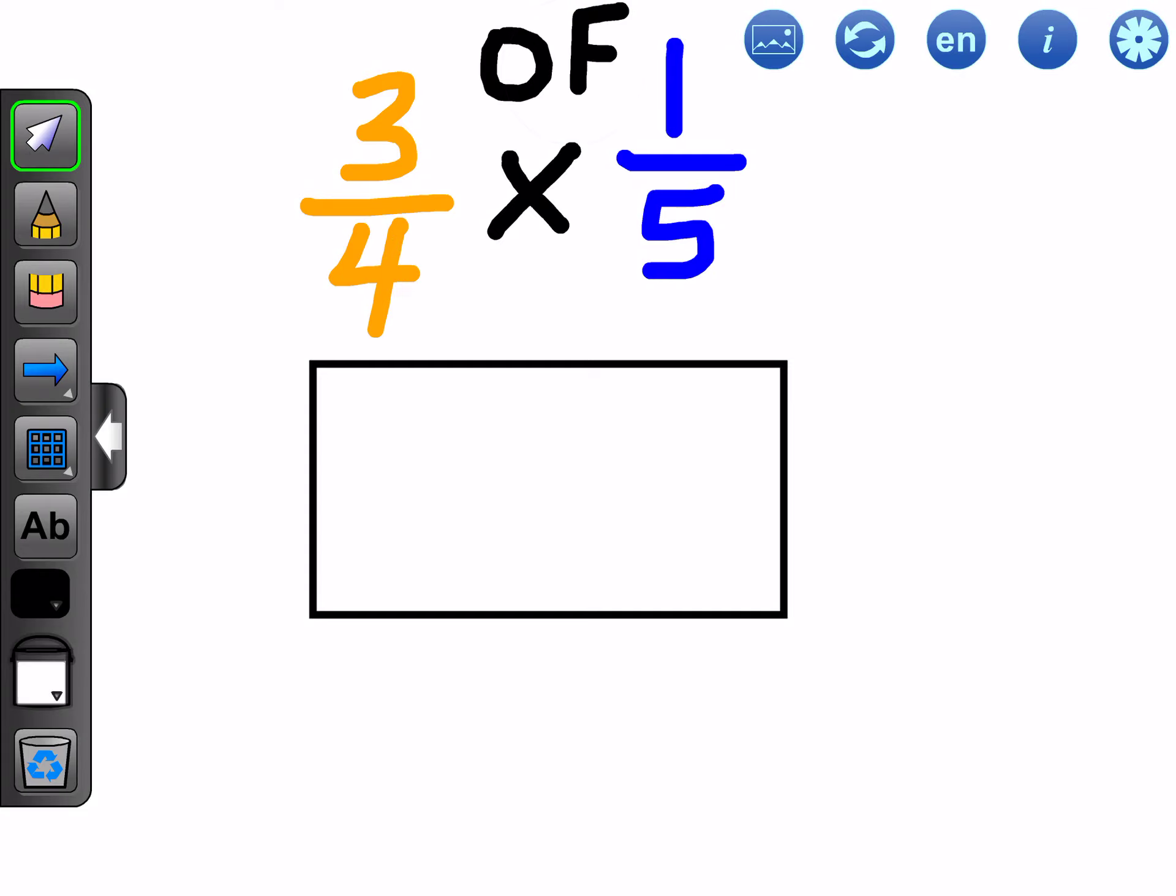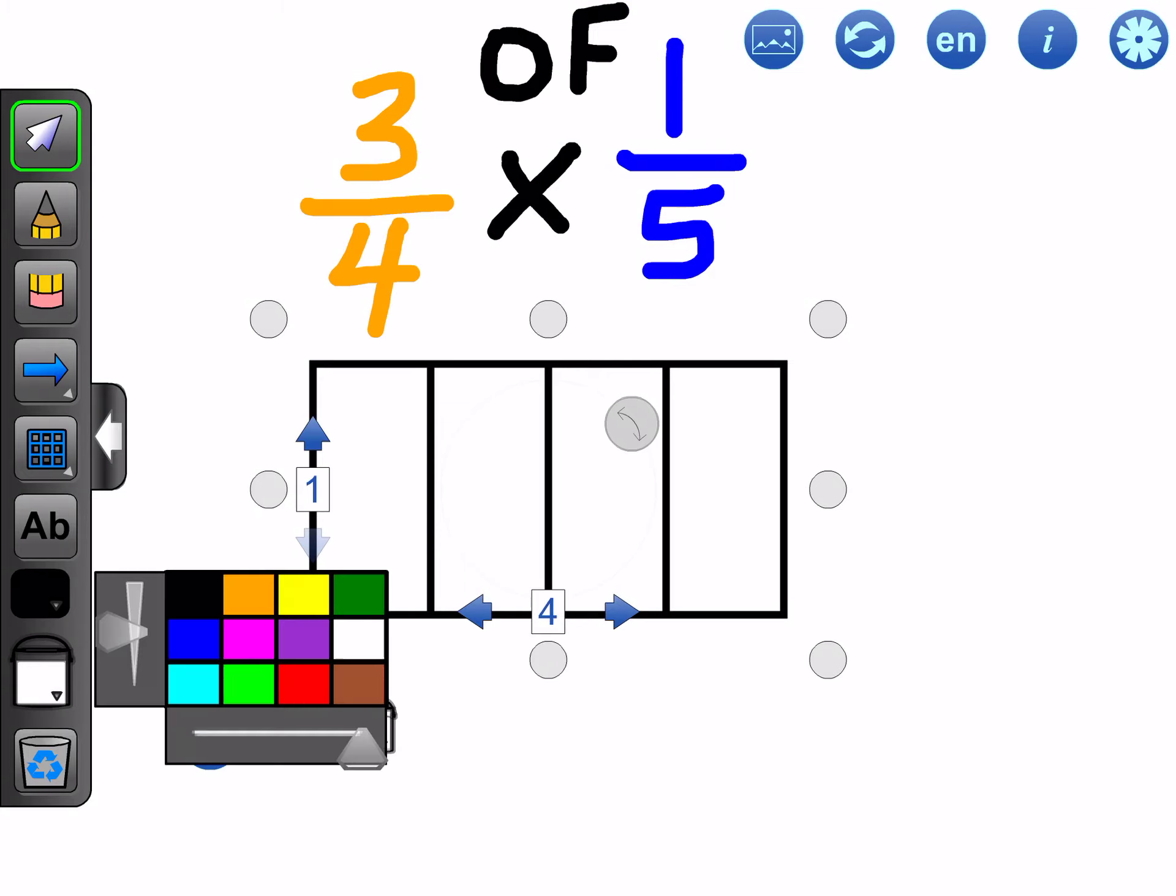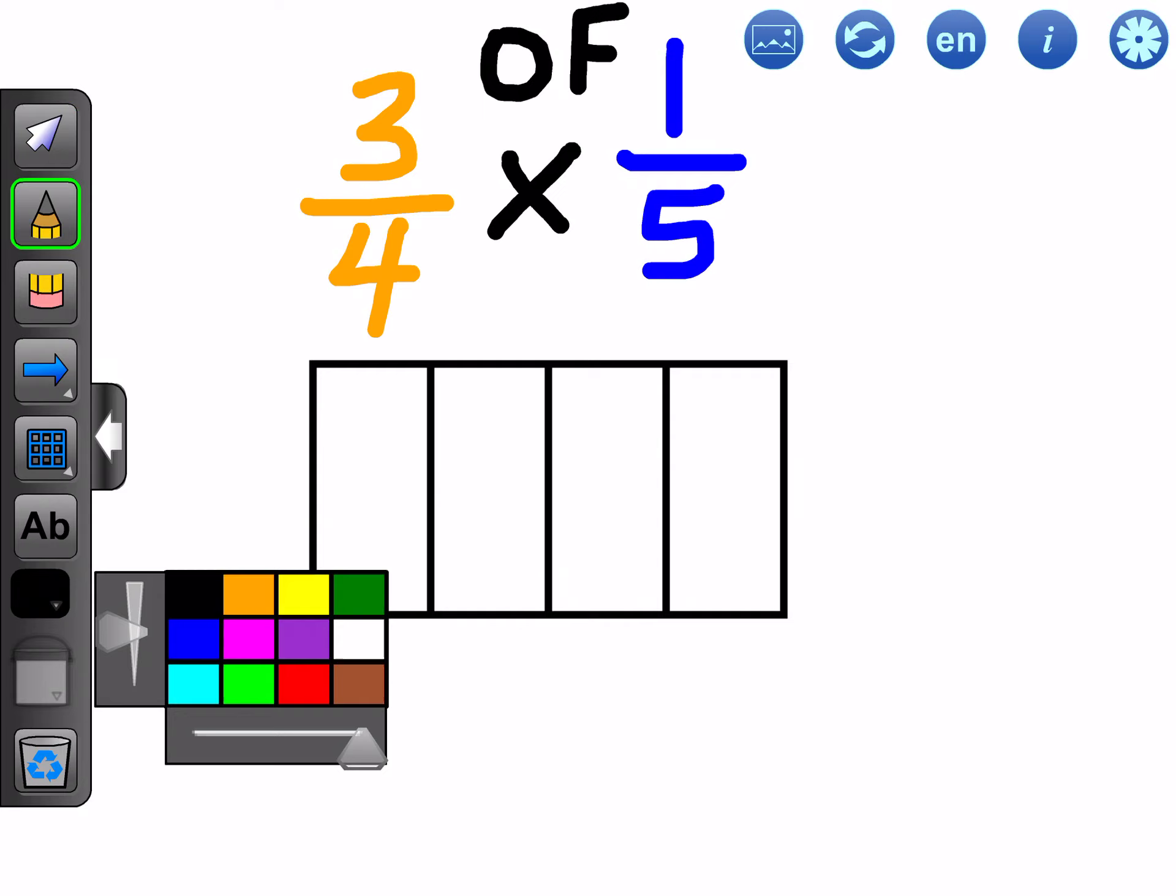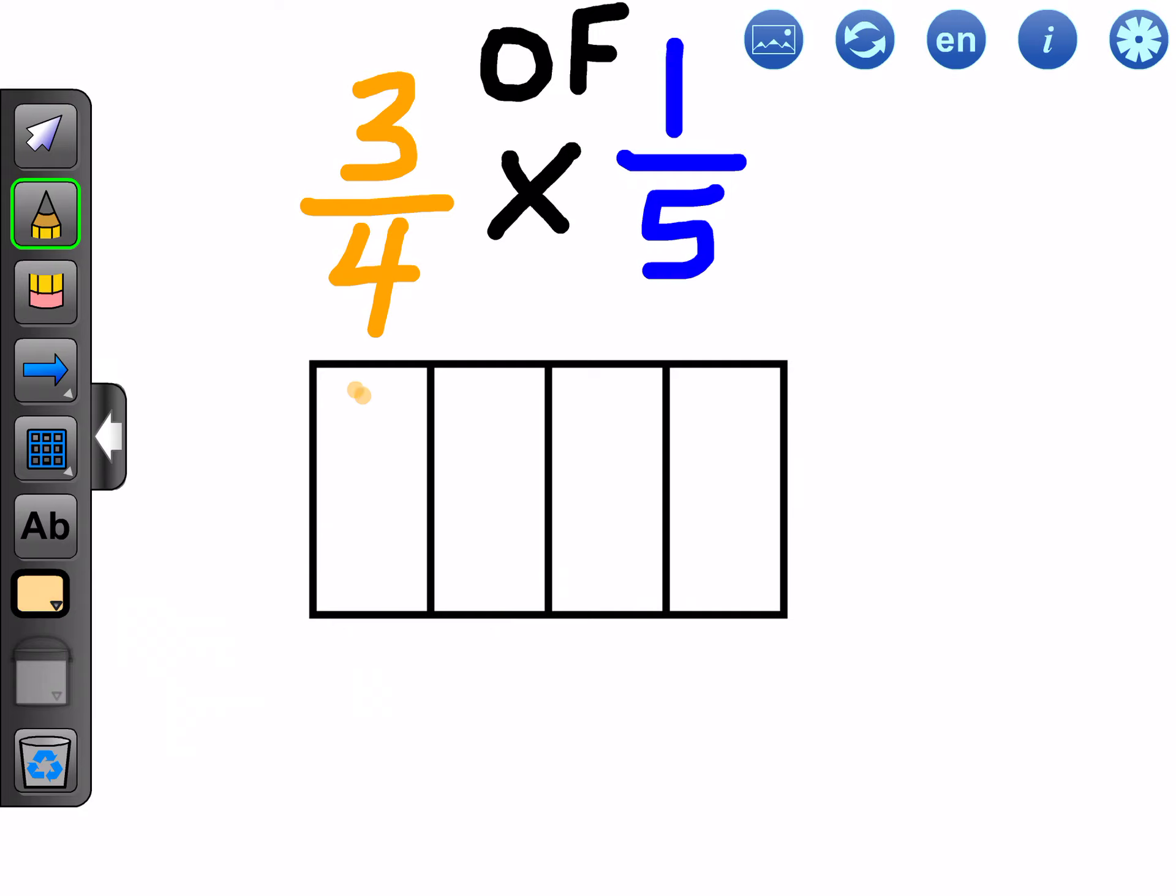Now, let's start off by representing on our area model three quarters. So if we take our whole and divide it into quarters, we will need to color in three of the four of them. So let's try that, and we will color in three of the four pieces here.